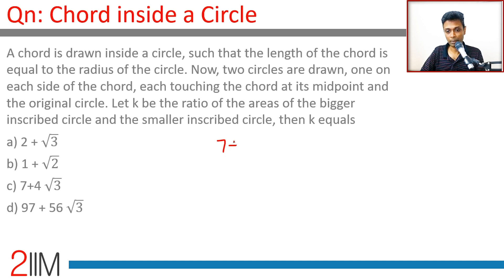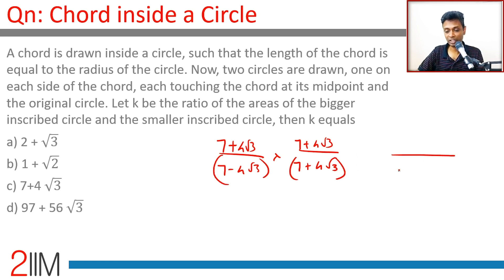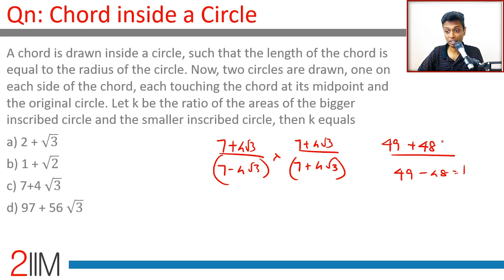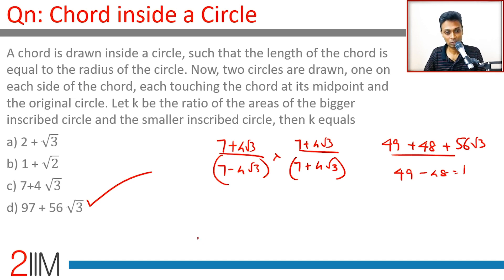Multiplying numerator and denominator: (7 + 4√3) multiplied by (7 + 4√3) gives 49 + 56√3 + 48, which is 97 + 56√3. The denominator (7 − 4√3)(7 + 4√3) = 49 − 48 = 1. So the final answer is 97 + 56√3 : 1.